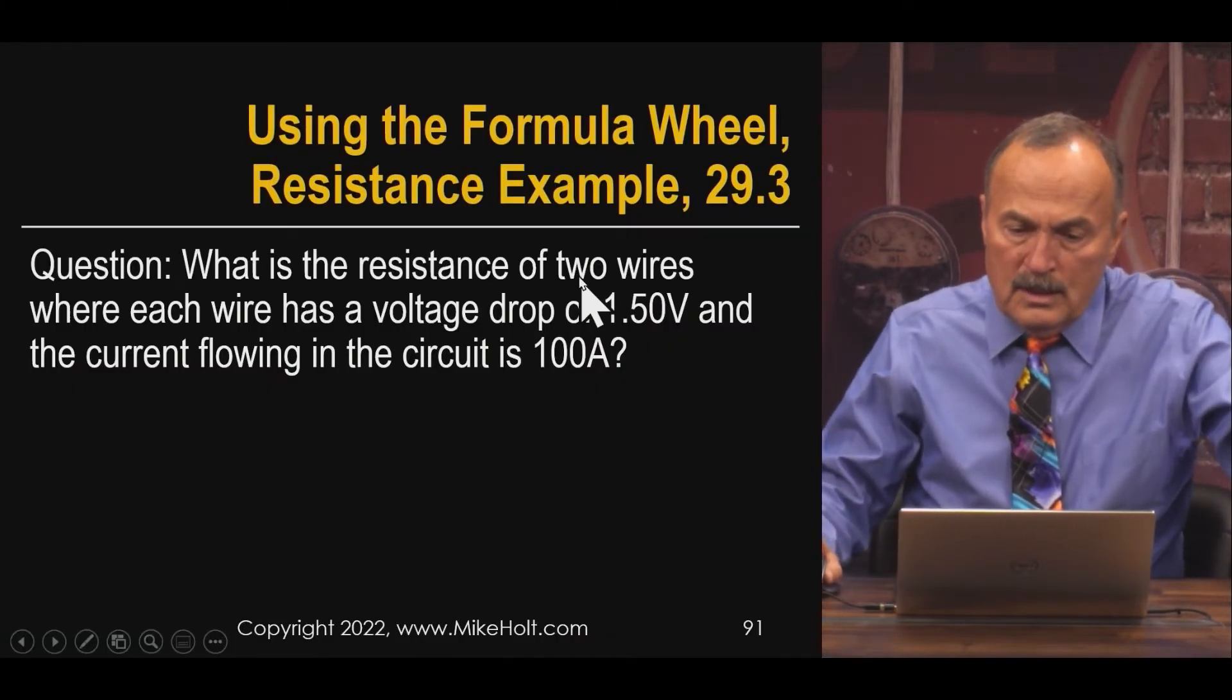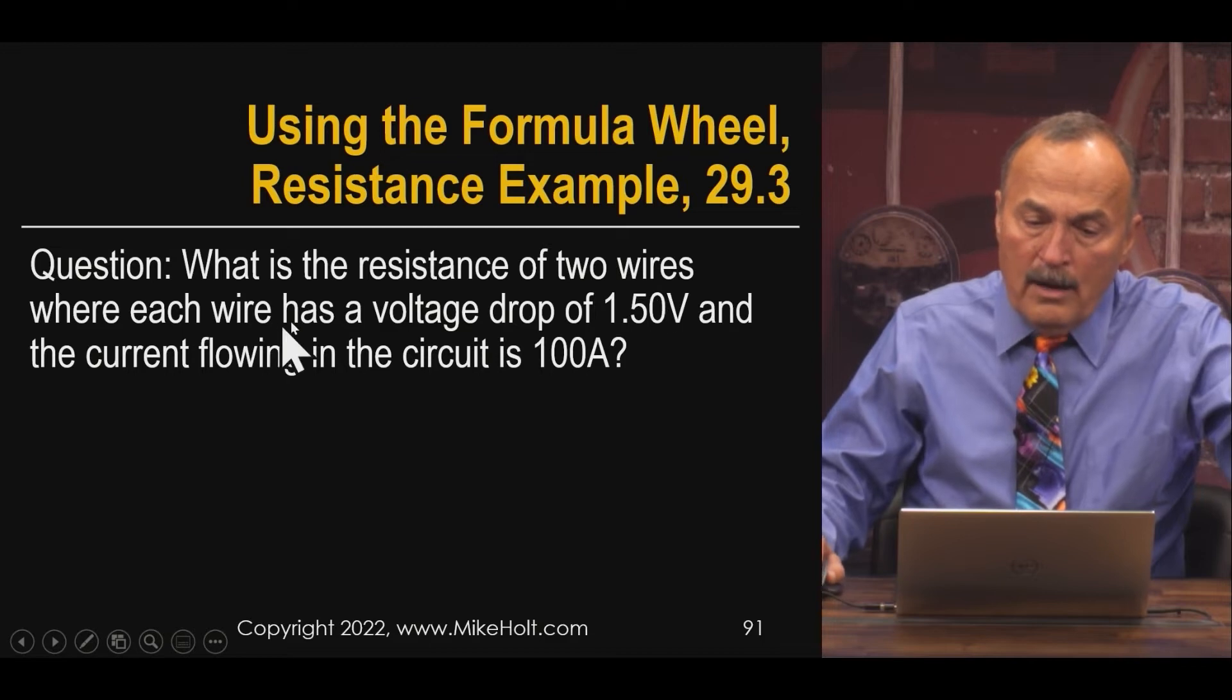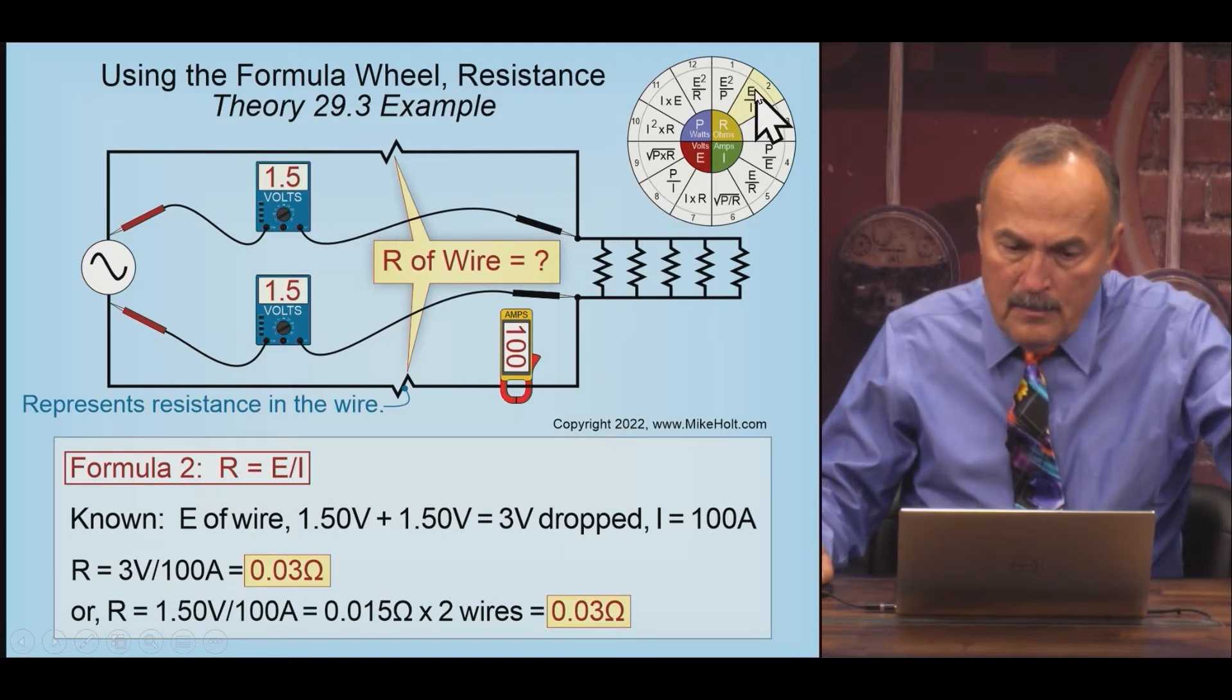Let me go to the next question. What's the resistance of the wire if I know the voltage drop and if I know the current flowing in there? So I'm looking for the resistance. Resistance, that's E over I.